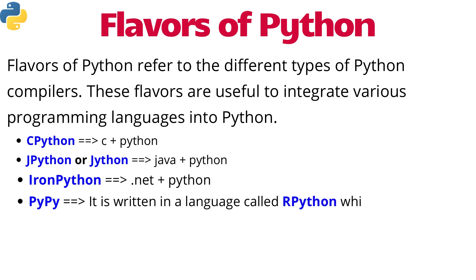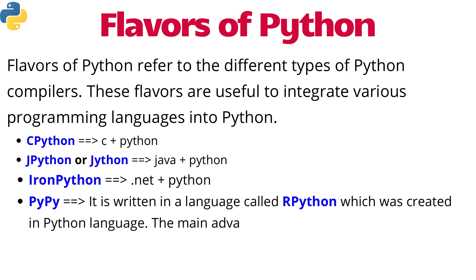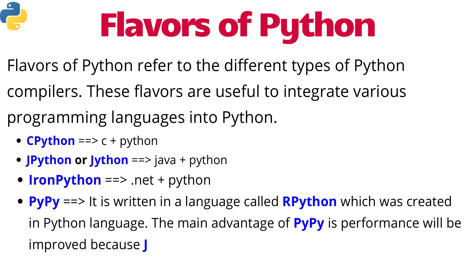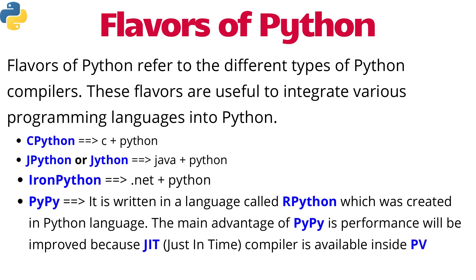Another flavor is PyPy. It is actually written in a language called RPython, which was created in the Python language. The main advantage of PyPy is that performance will be improved because a Just-In-Time compiler — that is, JIT compiler — is available inside the Python Virtual Machine, that is PVM. These are all some of the flavors of Python.